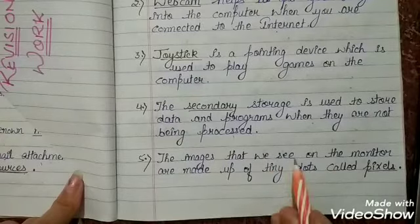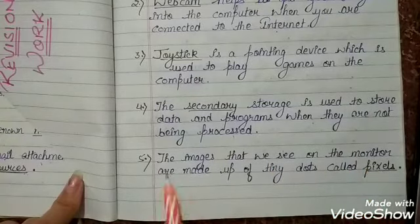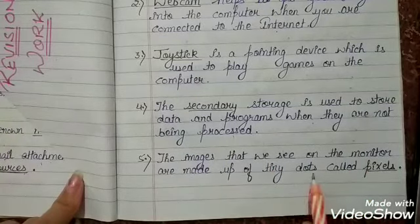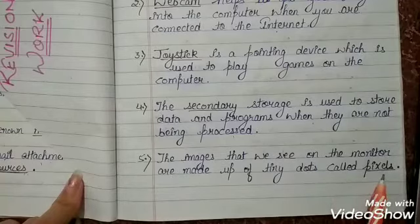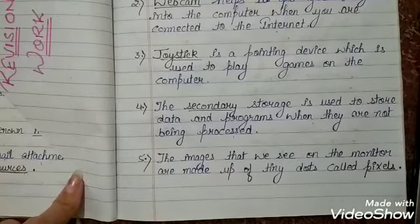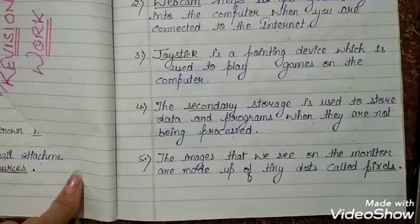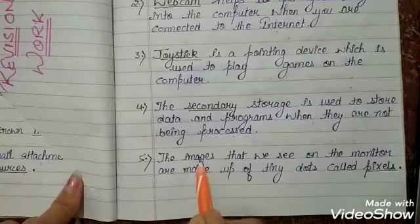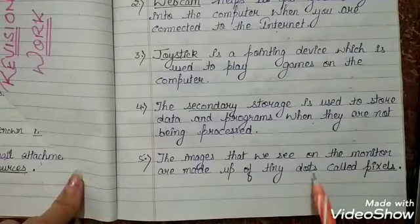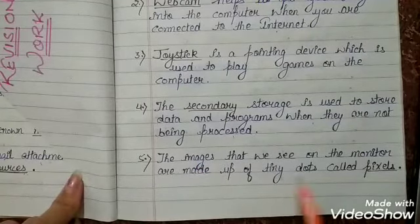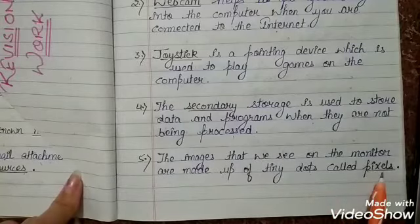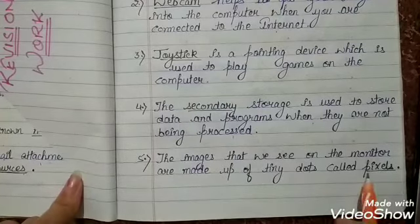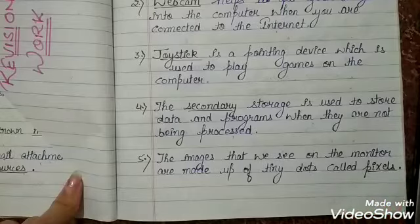Fifth: the images that we see on the monitor are made up of tiny dots called pixels. Monitor mein jo bhi images dikhti hain woh pixels se bani hoti hain. And the spelling of pixels is P-I-X-E-L-S.